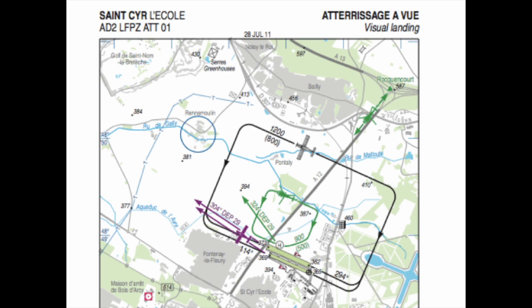This is a segment of the visual approach chart of Lima Foxtrot Papa Zulu in the outskirts of Paris. Look at the end of the downwind leg and you'll see two altitude settings. The one in brackets is the AGL altitude of the traffic pattern and, as you might have noticed, it's at 800 feet, not 1000 feet. The reason behind this is that the Paris class A airspace starts at 1200 feet above the airfield. The 300-foot margin is there to give a safety margin between aircraft in the pattern and aircraft arriving overhead.